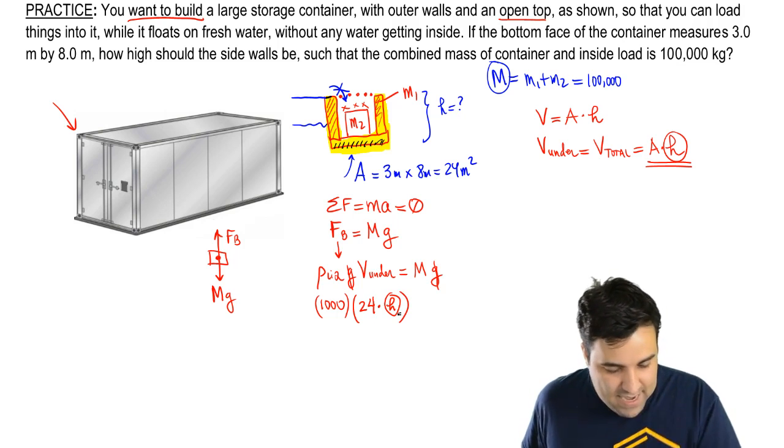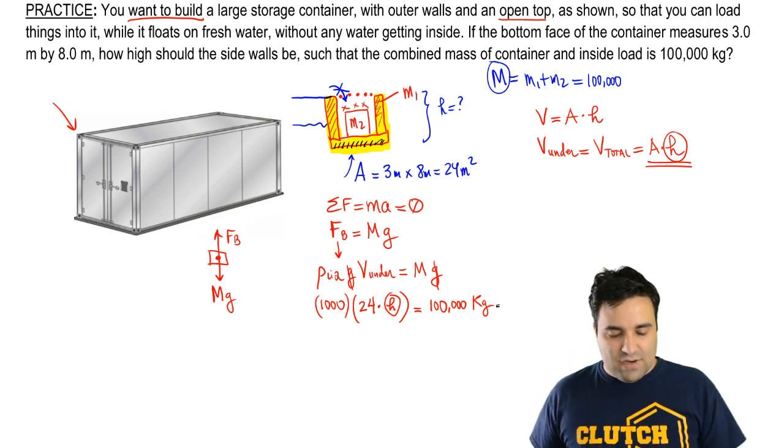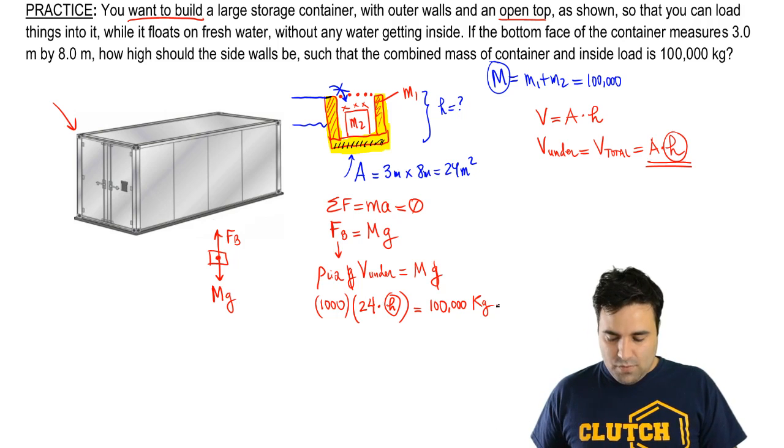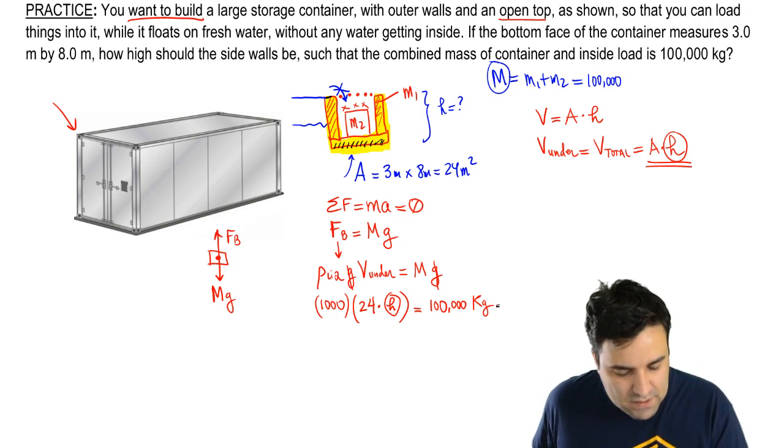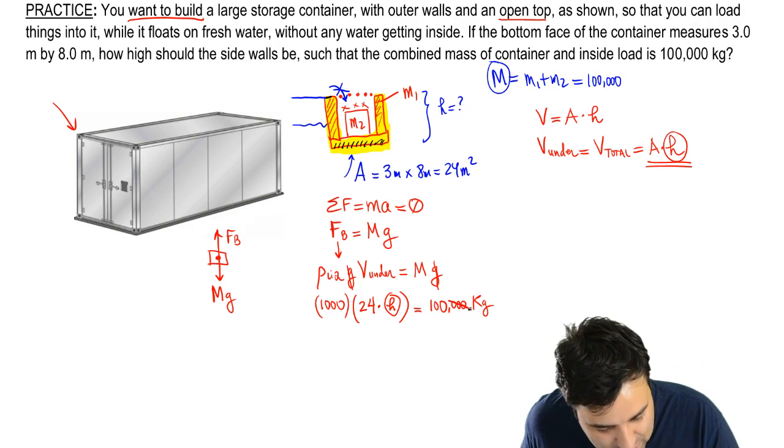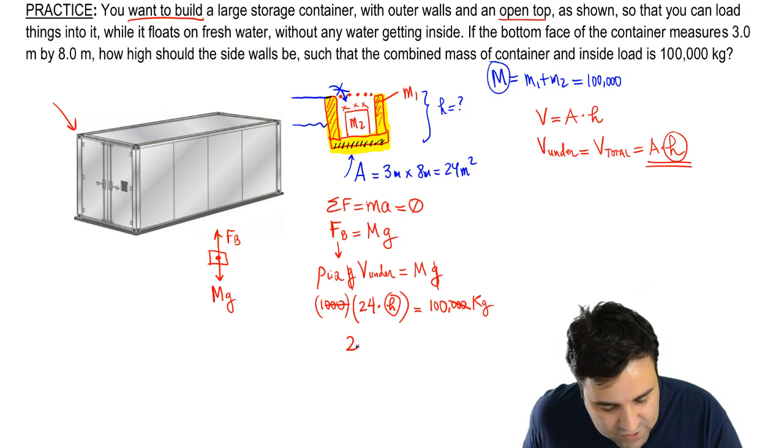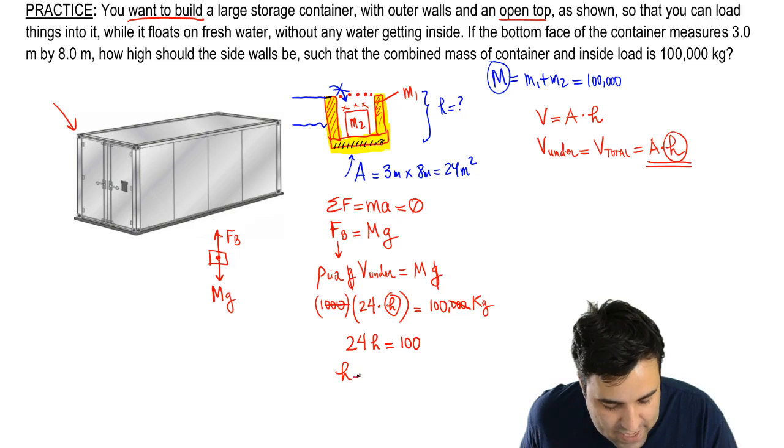And the mass is 100,000 kilograms. So what I can do here is I can cancel this 1000 with this 1000 over here, and what I have left is 24h equals 100, so h is 100 divided by 24, which is 4.2 meters.